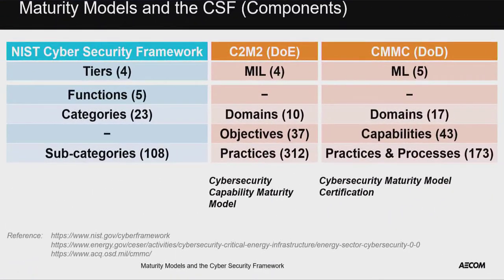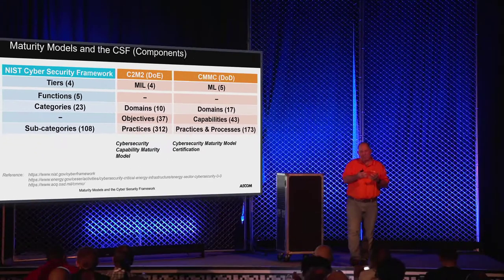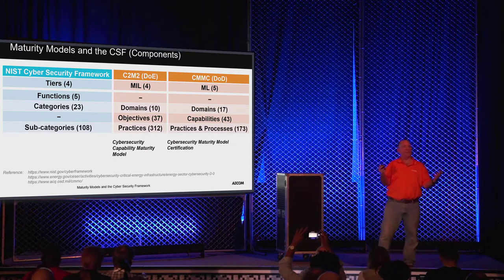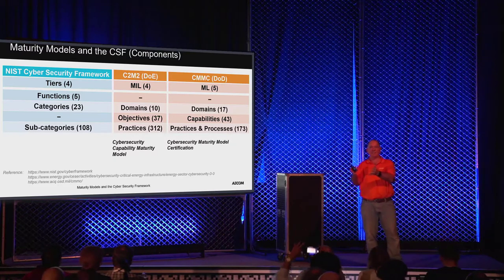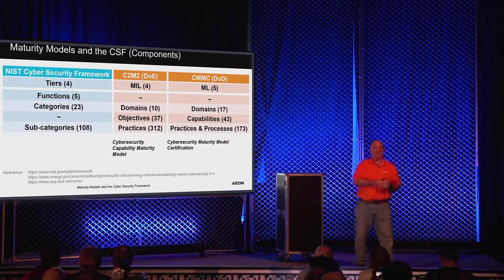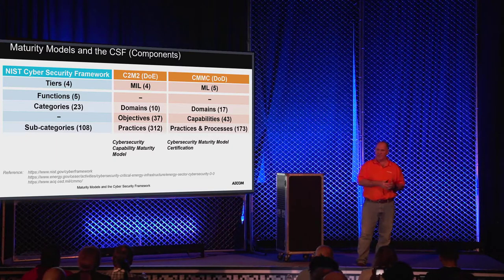We open up the cybersecurity framework and see it uses a terminology set of tiers, functions, categories, and subcategories. My biggest beef with NIST is they create a terminology set that tends to deviate from others. In the ICS space, the big one is how they define a security level or security assurance level — very different from how IEC 62443 defines a security level. I wanted to show how there's some alignment between the two.